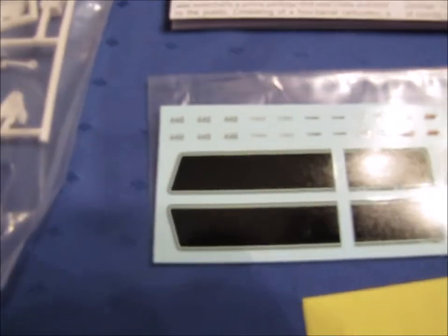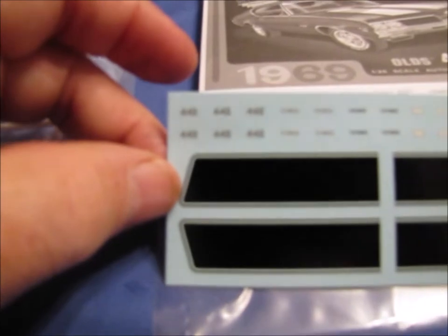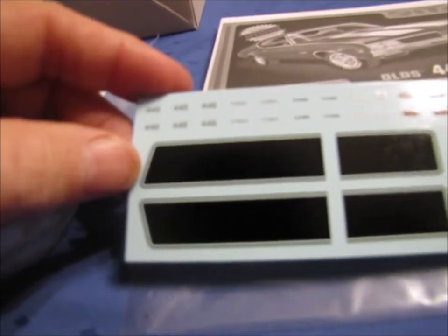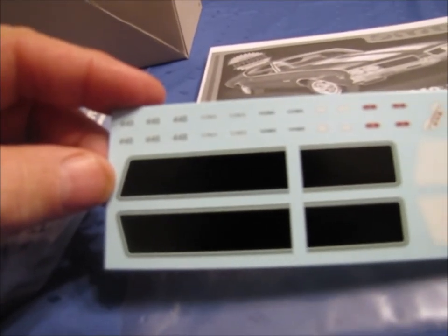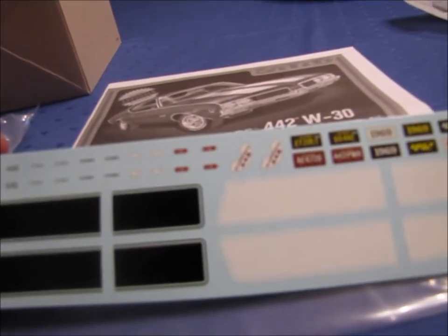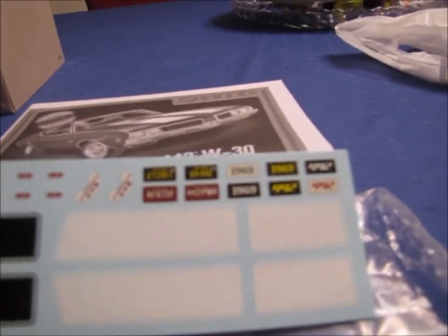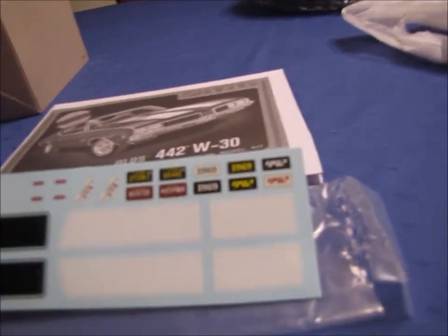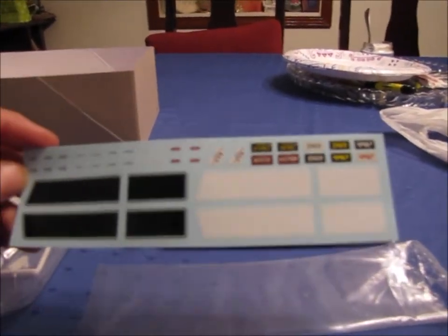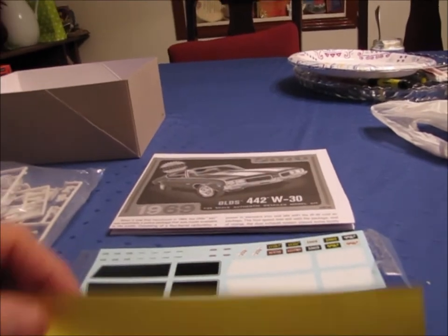We've got the decal sheet opened up and kind of hard to see with the collier on there. But, you can see I've got 442 emblems, got the lights, marker lights. This is the emblem that's gonna go on the breather if I decide to use the breather. Quite a few examples of license tags. And then it's got rally stripes. Black or white rally stripes. So, nice little decal sheet.